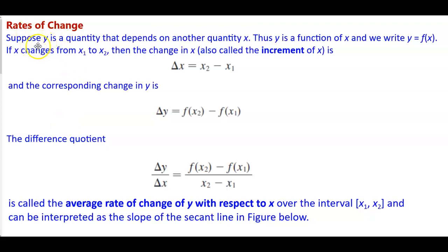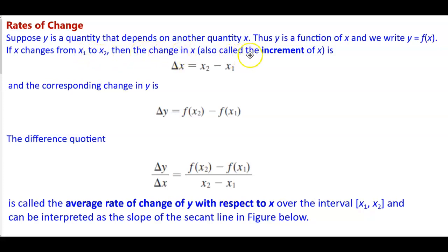Rates of change. Suppose y is a quantity that depends on another quantity x. Thus y is a function of x, and we write y is equal to f of x. Now if x changes from a value of x1 to x2, then the change in x, also called the increment of x, is abbreviated using the symbol delta, so that the change in x is equal to x2 minus x1.